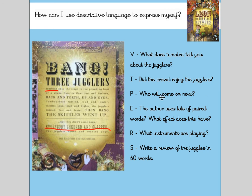We then come on to predict. The question says: who will come on next? For a prediction there isn't a particular answer — what you'd be doing is thinking about another circus act suitable to come on stage, using your subject knowledge and prior knowledge. So you might say: I predict a clown will come on next because you find clowns at a circus. Or you might say: I predict an acrobat will come on next because I've been to a circus and seen an acrobat perform.